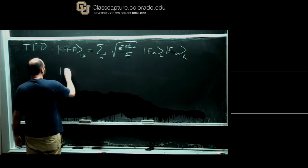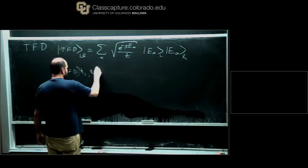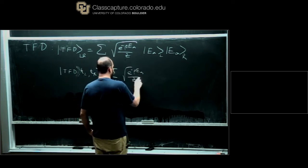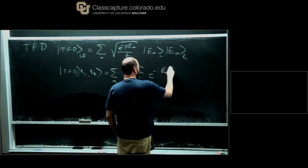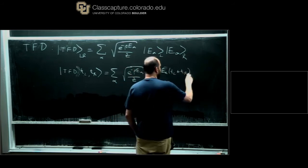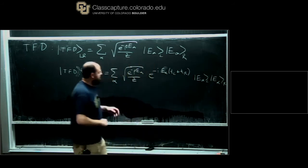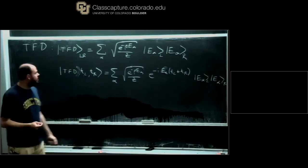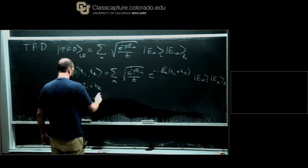You can also consider a time-evolved version of this state, where I evolve separately with times on the left and the right. A little calculation will show you that this depends just on the sum of the times. That's because the energies are entangled in this special way, so whether you evolve on the left or the right doesn't matter — it's the same state. This only depends on T_left plus T_right, not T_left minus T_right.